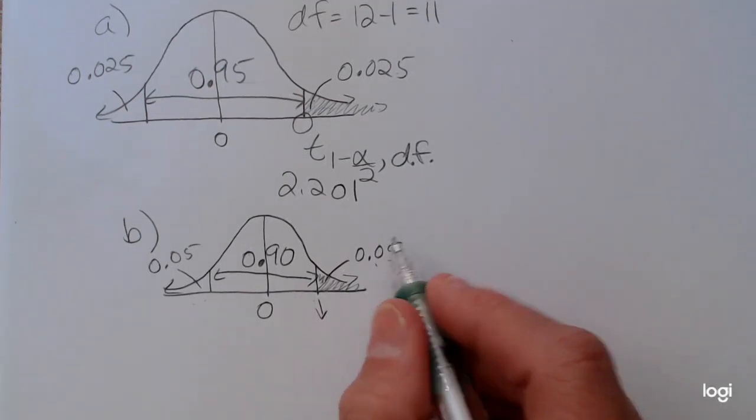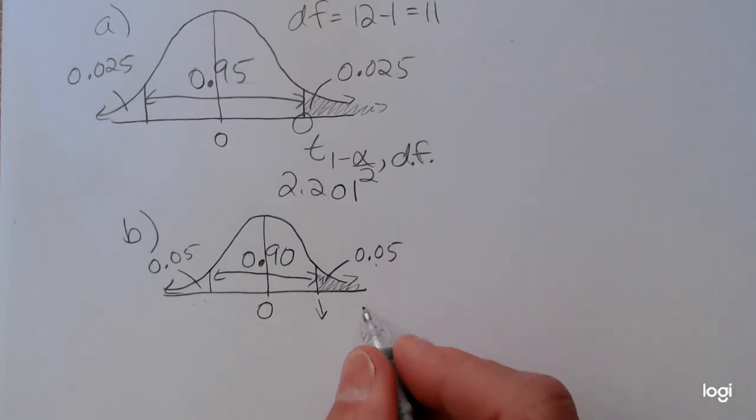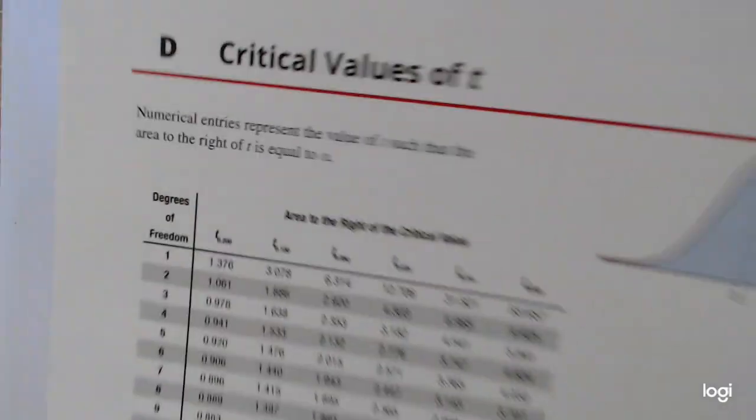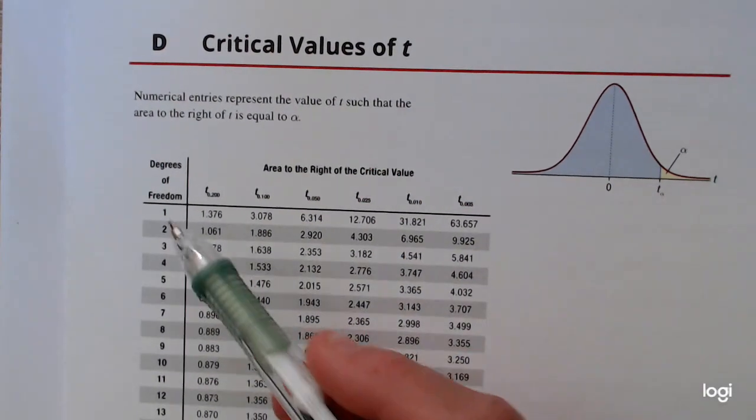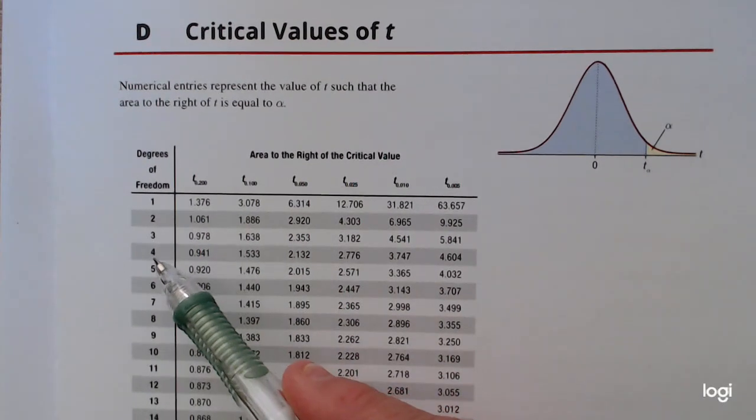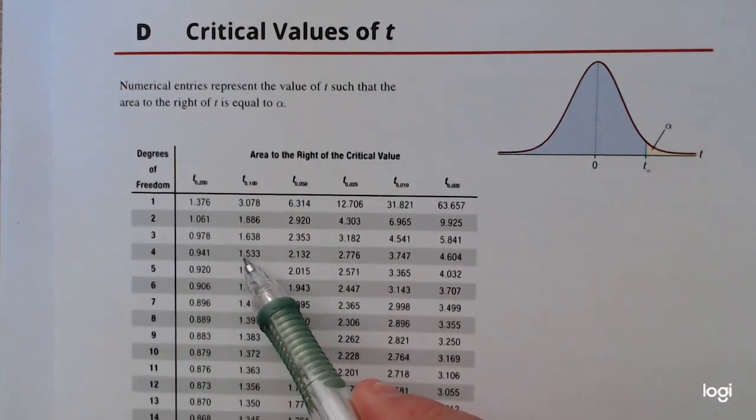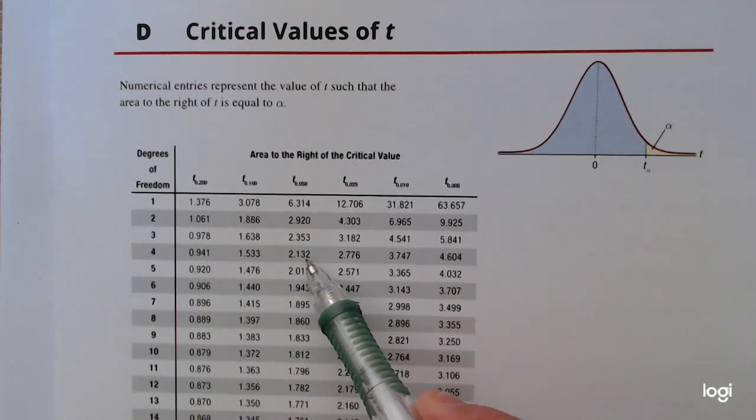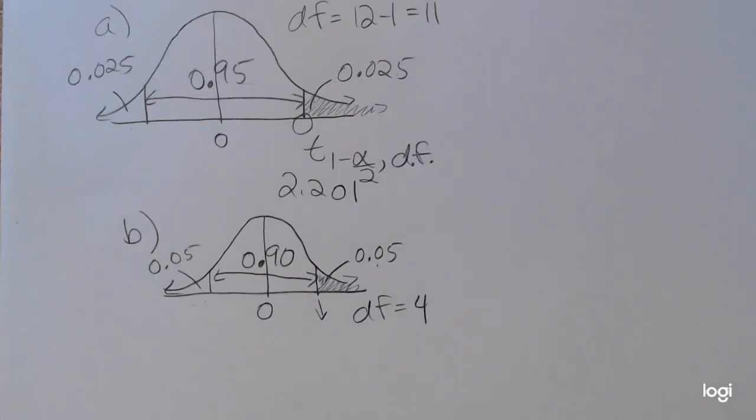So if my sample size is 5, then my degrees of freedom will be 4. So again, going back to the t table, reading down to 4 degrees of freedom, and over to t sub 0.05, because that's how much area is to the right or is in that upper tail, I get a value of 2.132.